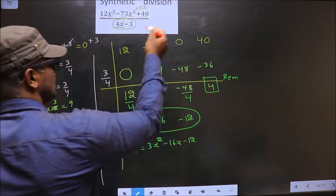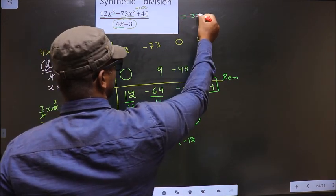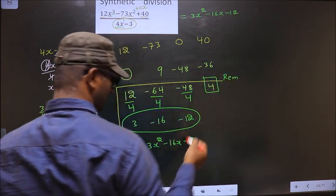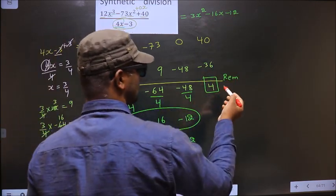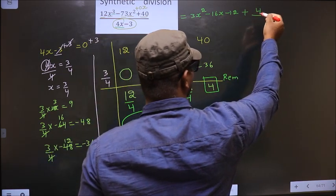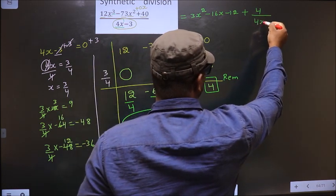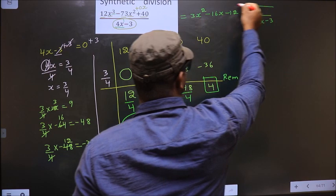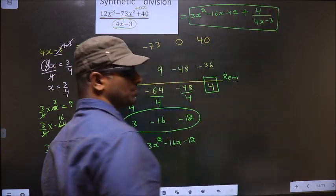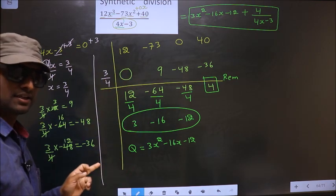So now this equals 3x square minus 16x minus 12, and the remainder is 4. So plus 4 by—remainder will have same denominator as this—so by 4x minus 3. So this is our answer. Am I clear?